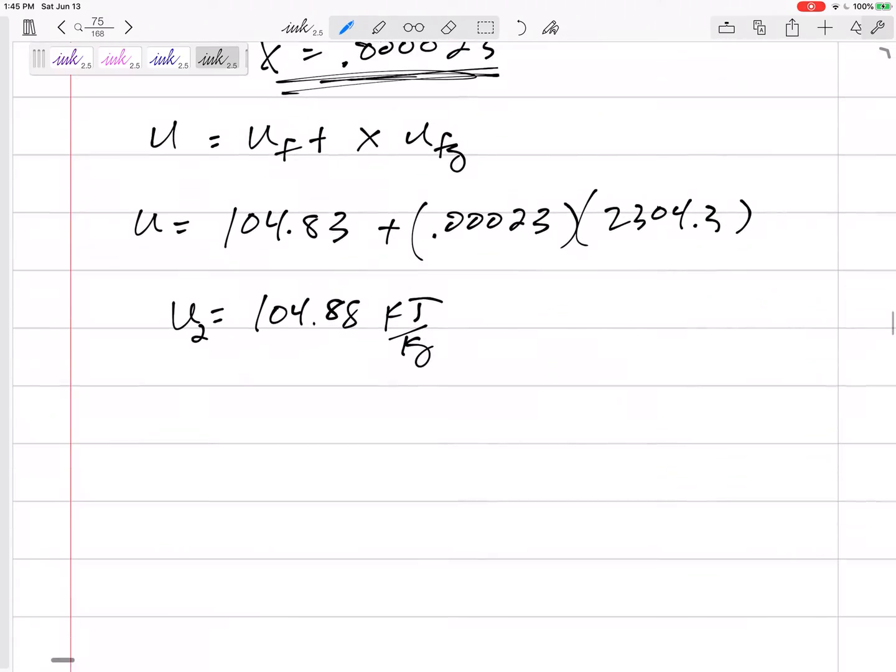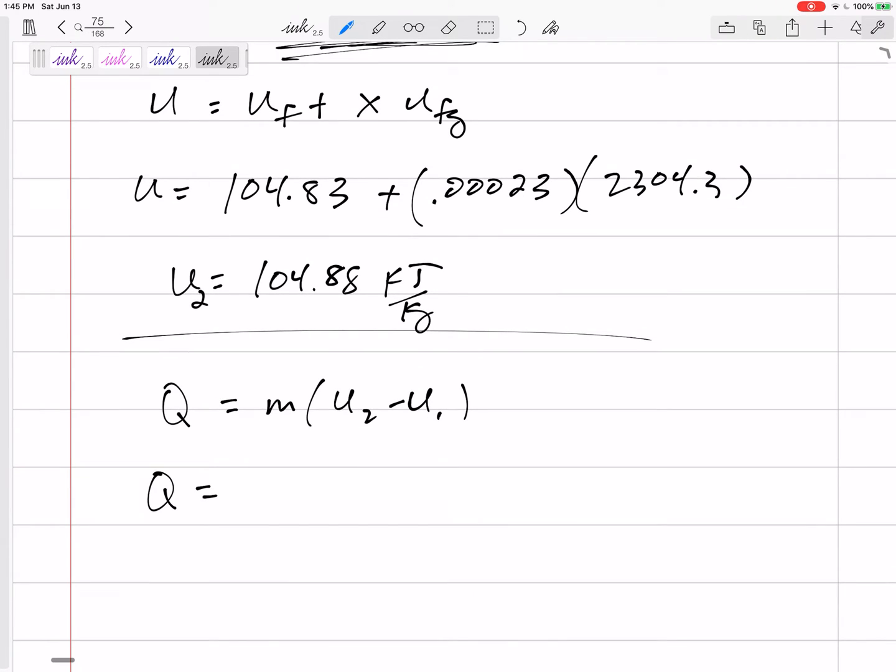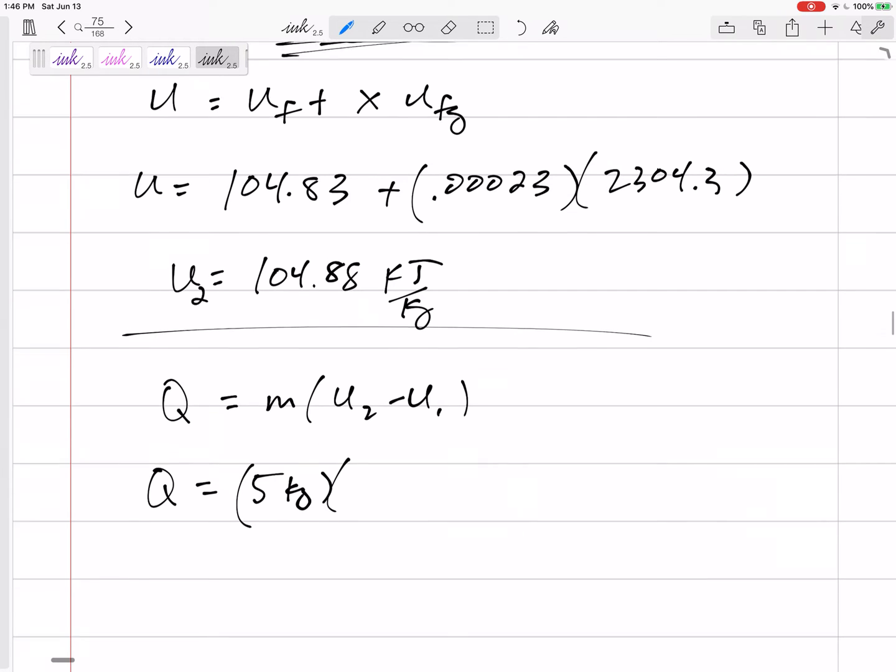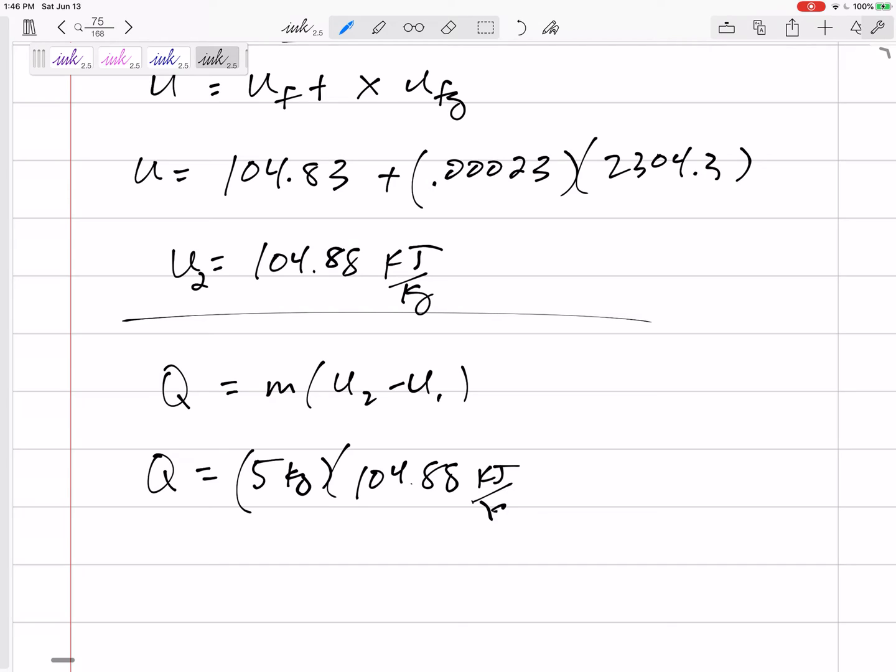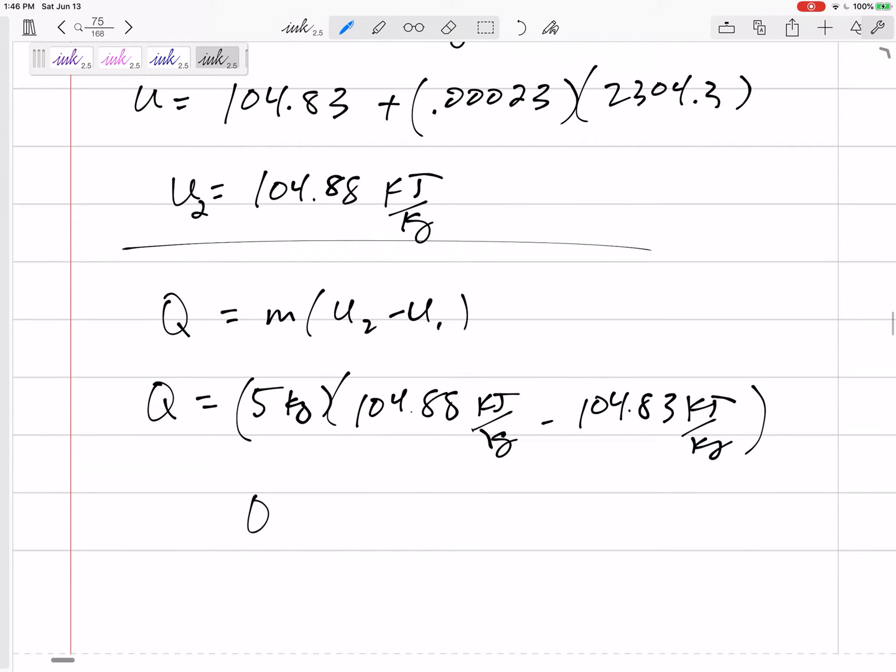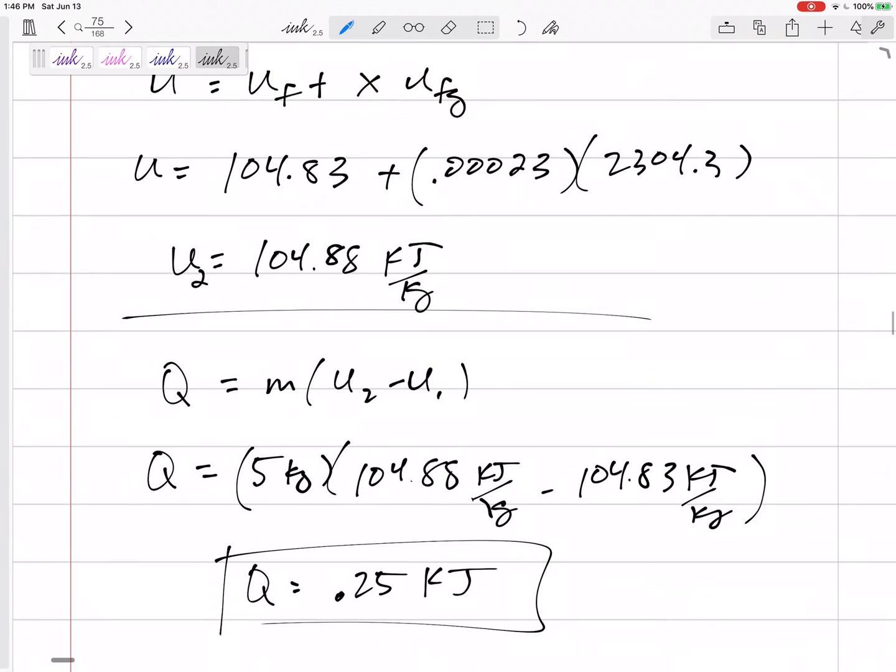We've got everything that we need to find from the energy equation. Q on the left-hand side, delta U on the right-hand side, U2 minus U1. The Q needed would be 5 kilograms times 104.88 minus 104.83. Q 0.25 kilojoules or 250 joules. It came out positive. What does positive mean? Positive means in, Q in. That is a heat transfer needed to keep it heated, in order to keep the temperature 25 degrees C.